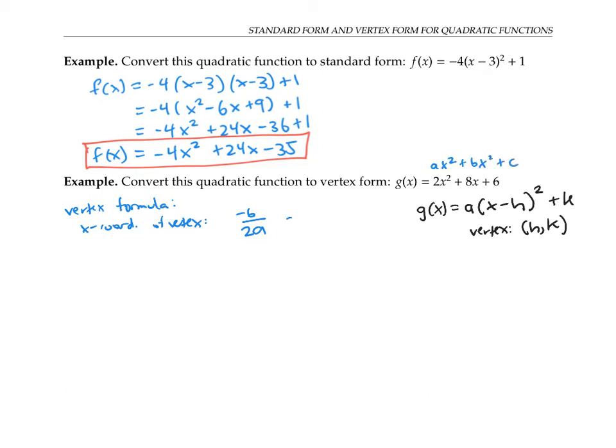So in this case, we get an x coordinate of negative eight over two times two, or negative two.